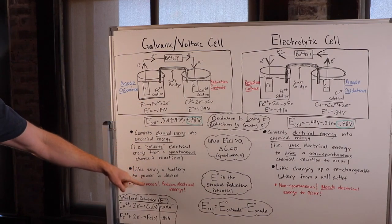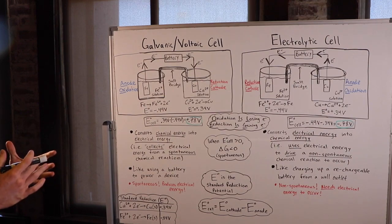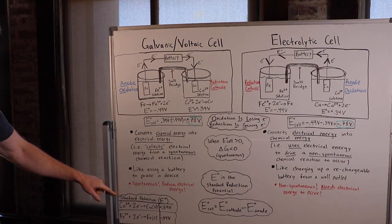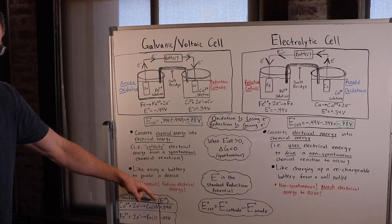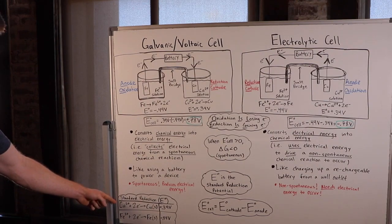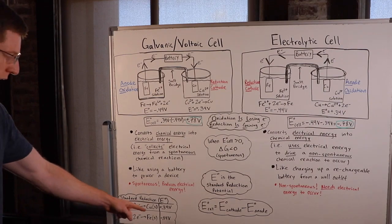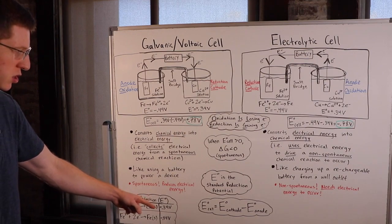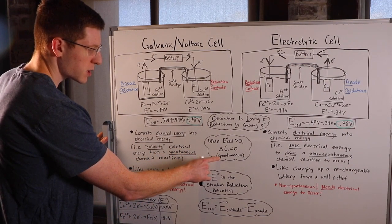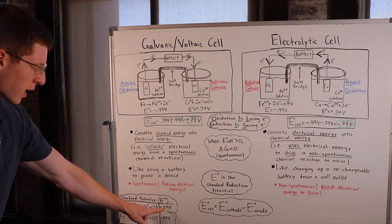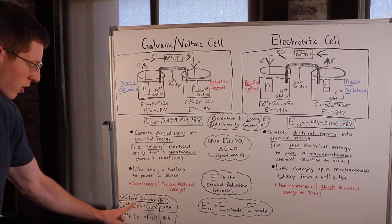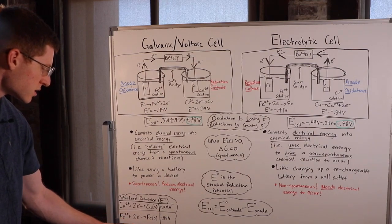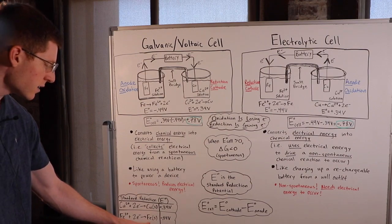How do we know this reaction is going to be spontaneous? Each element has a natural tendency to either gain or donate electrons, and we can quantify that with the standard reduction potential, or E naught. The standard reduction potentials for copper and iron each have a certain voltage. When E naught is positive, delta G is negative, meaning the reaction is spontaneous. Since the E naught for copper is positive, copper spontaneously wants to accept electrons and get reduced. Since the E naught for iron is negative, delta G would be greater than zero — iron does not want to gain electrons.